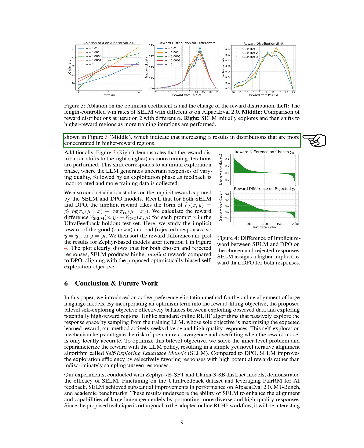Next, we looked into how reward distributions change with different alpha values and iterations. By sampling from the LLM using prompts from the ultrafeedback holdout test set and generating rewards with pair-RM, we analyzed the distribution of reward values. The results for different alpha values of SELM iteration 2 on Zephyr showed that higher alpha values lead to more concentrated distributions in regions with higher rewards. Moreover, the reward distribution shifts towards higher values with more training iterations, reflecting an initial exploration phase followed by an exploitation phase as feedback is integrated.